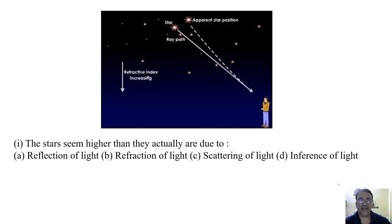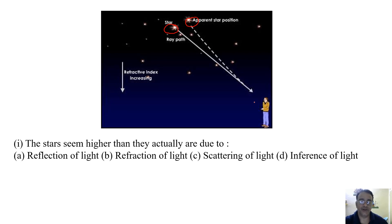There is a figure showing the actual position and the apparent star position, and this difference happens because of atmospheric refraction. Based on this figure, some questions are presented.